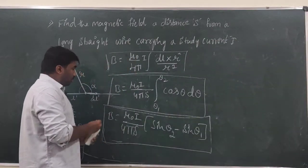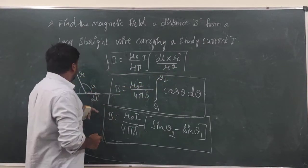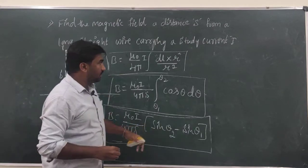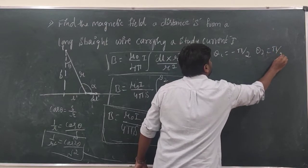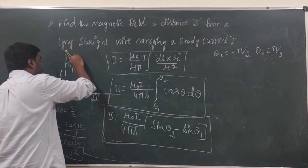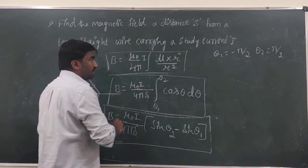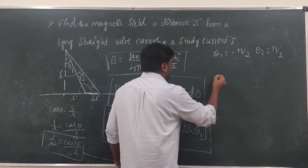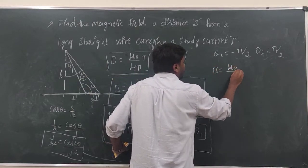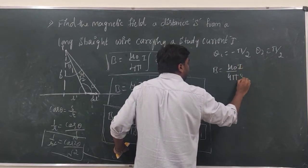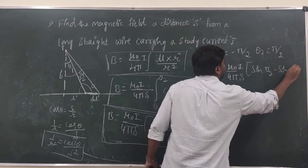If the wire is very long — effectively infinite — then θ₁ = −π/2 and θ₂ = +π/2. Substituting into the expression: B = (μ₀i/4πs) · (sin(π/2) − sin(−π/2)).